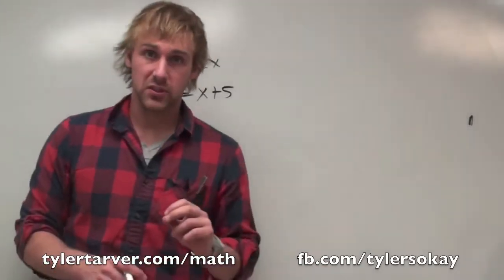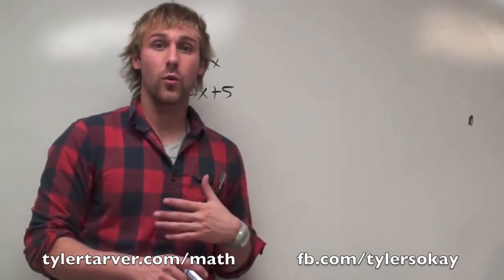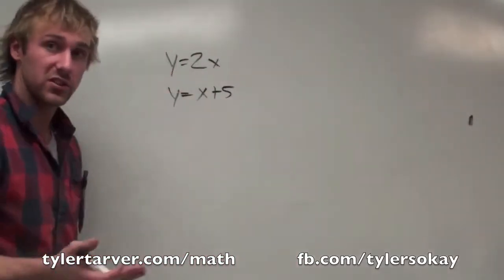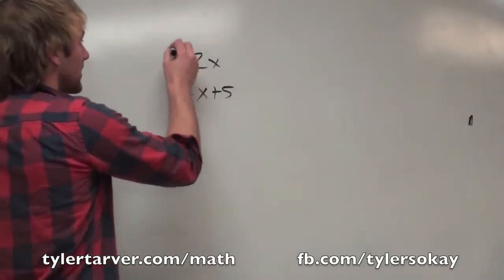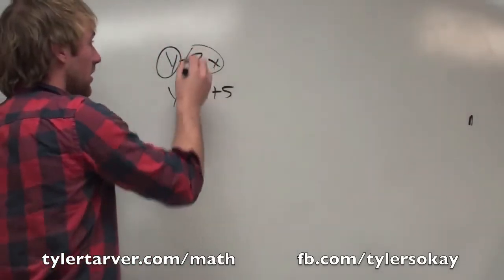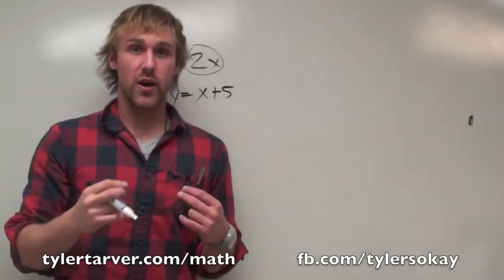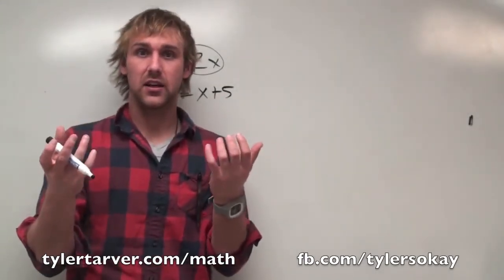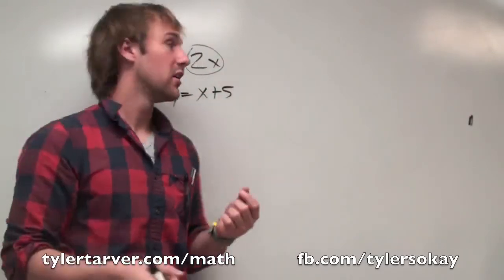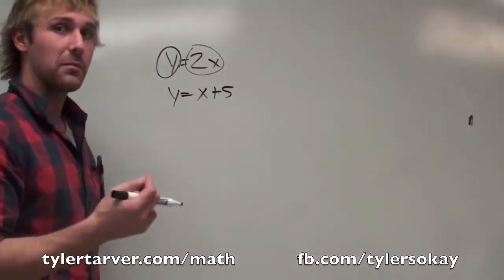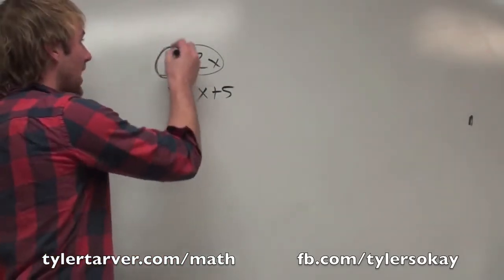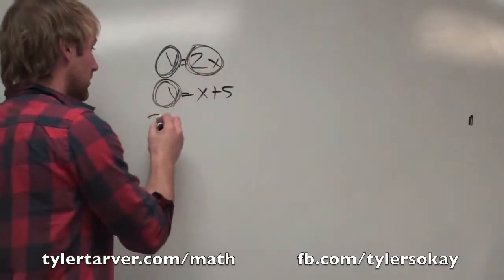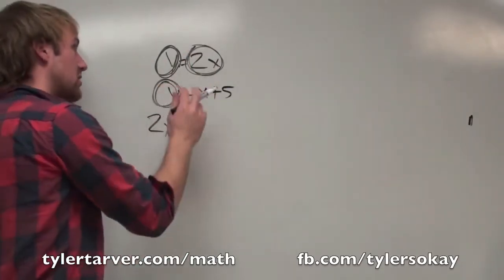The first step to solve by substitution: you've got to get an x or a y by itself. We've actually already got y's by themselves, which is quite fortunate. If y equals 2x, then y has the exact same value as 2x — they look different, like a ten dollar bill and two fives, but they're equal. So in the other equation, I can plug in what y is equal to and replace that y with 2x.